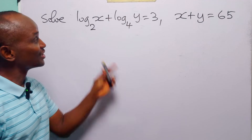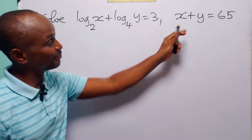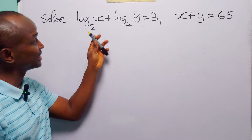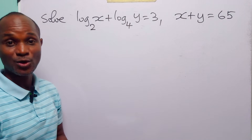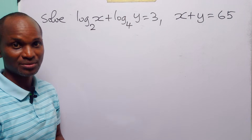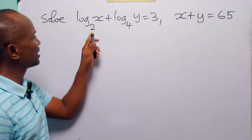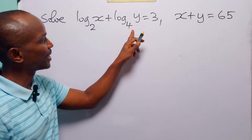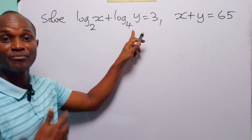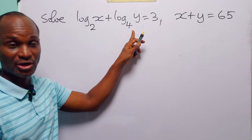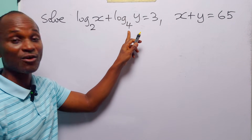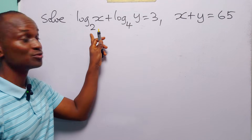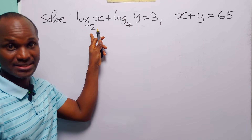Hello and welcome. To solve these simultaneous equations, let us start by simplifying this logarithmic equation as far as possible. Now here we have log to base 2 of x, while here we have log to base 4 of y. The first thing we are going to do is to change the base of this logarithm from base 4 to base 2 to match this term.